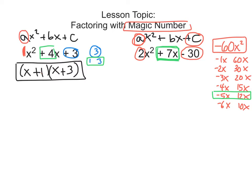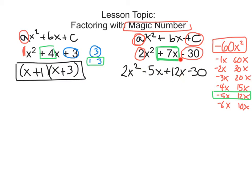So instead, what we do for magic number is we start by writing the first term: 2x squared. Then we're going to write the third term over here and leave some nice space in the middle. So minus 30. Now in the middle we're going to write exactly what we have — negative 5x plus 12x. If we think about this, if I combined it, it would get us back to the original. So we haven't changed anything; it has just been rewritten.